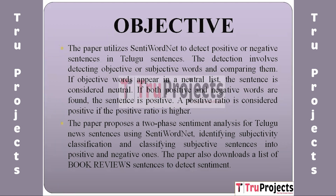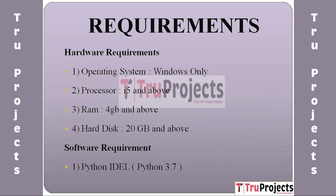The project uses SentiWordNet to detect positive or negative sentences in Telugu. It compares objective and subjective words, with neutral sentences being neutral. Positive sentences have both positive and negative words, and a sentence is considered positive if the positive ratio is higher. The two-phase sentiment analysis classifies subjectivity and then classifies subjective sentences into positive and negative ones. The paper also uses a list of book review sentences to detect sentiment.